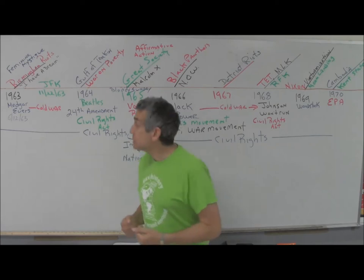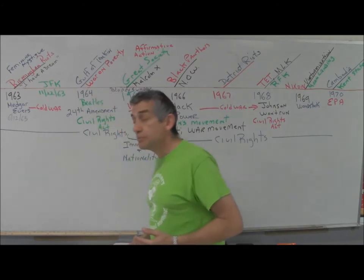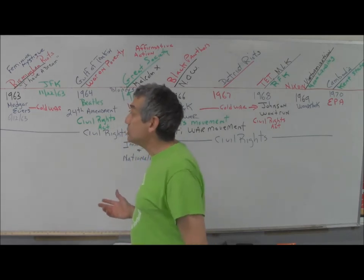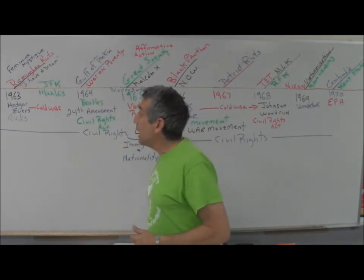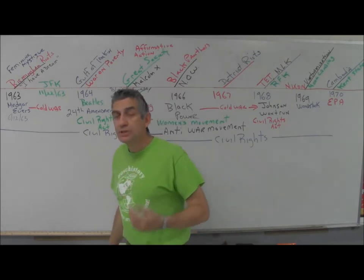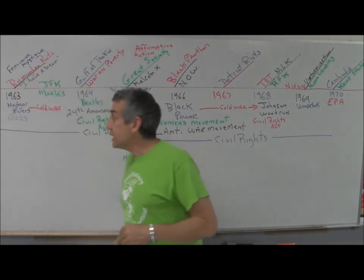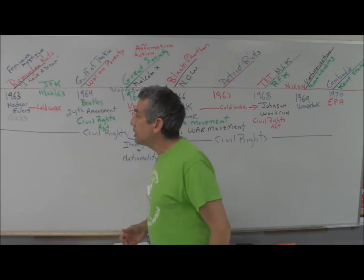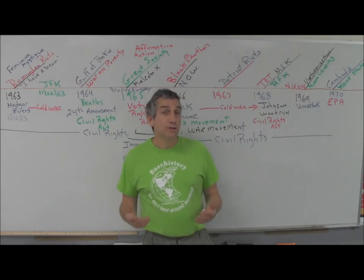1963 is a very big year. In June, Medgar Evers is going to be assassinated while his children are outside playing - they're actually going to watch. The Birmingham riots occurred before Medgar Evers' assassination in May of 1963. The order goes: Birmingham riots in May, the response by the Kennedy administration, then Medgar Evers being assassinated on June 12, 1963.